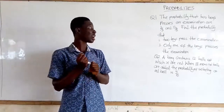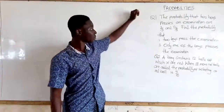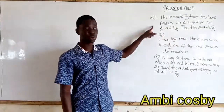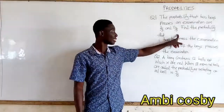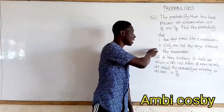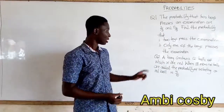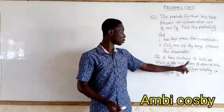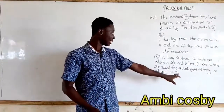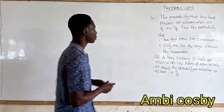We are going to solve some minor questions on probability. These are the two questions we are to solve. The first one: the probability that two boys pass an examination are 2 over 3 and 5 over 8. Find the probability that (i) both boys pass the examination, and (ii) only one of the boys passes the examination.